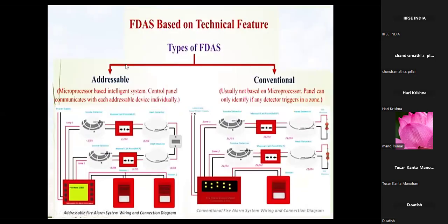Based on technical features, FDS systems have two types. One is addressable, which is a microprocessor-based intelligent system with a control panel that communicates with each addressable device individually. That means if you have maybe 10, 15, or hundreds of devices, this microprocessor has the ability to communicate individually with each alarm or detection system.